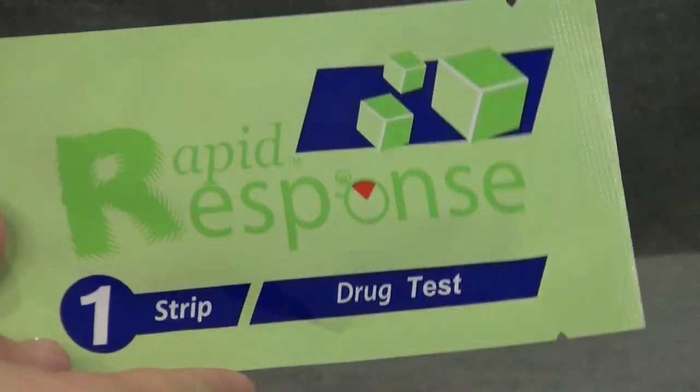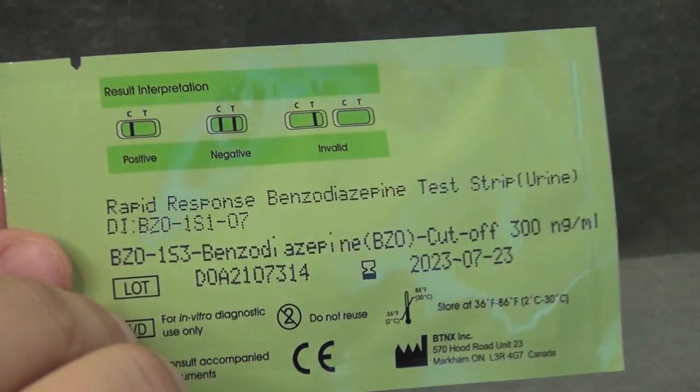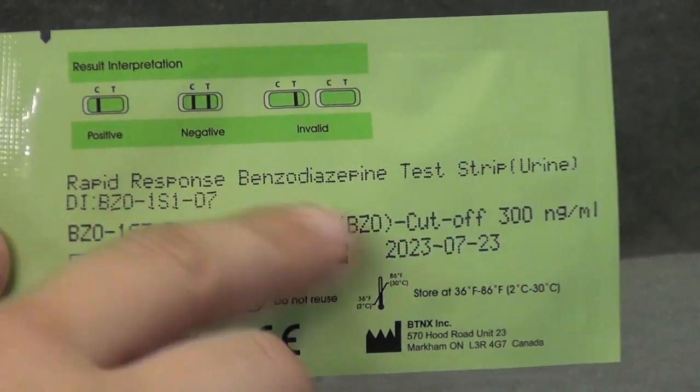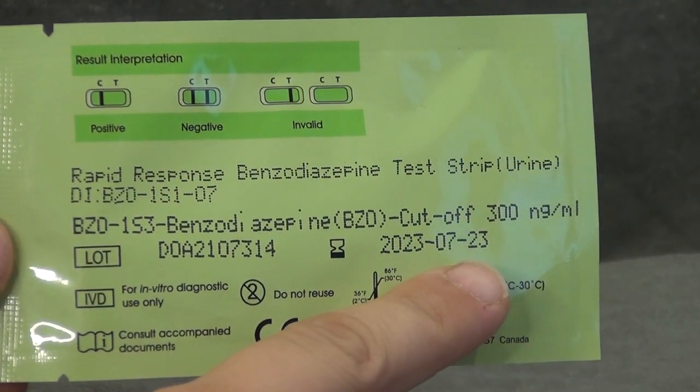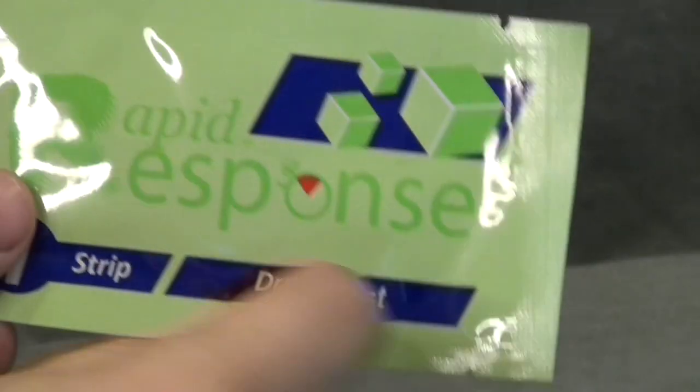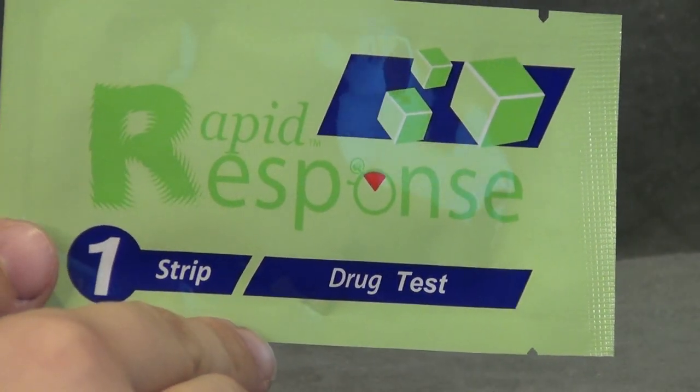Before you prepare your sample for testing, ensure you have the correct testing strip and that it is not expired. Look on the back of the package for the printed substance name as well as the expiry date. Once you are sure you have the correct testing strip, we can prepare our sample for testing.